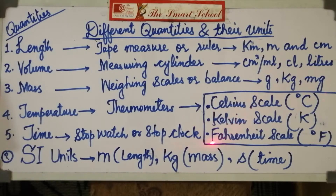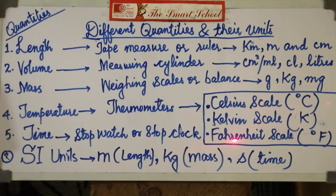The third scale is the Fahrenheit scale. It has much smaller degrees than the Kelvin and Celsius scales. On this scale, water freezes at 32 degrees Fahrenheit and the boiling point of water is 212 degrees Fahrenheit.